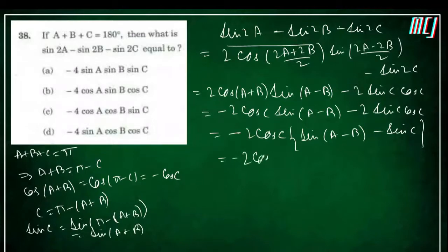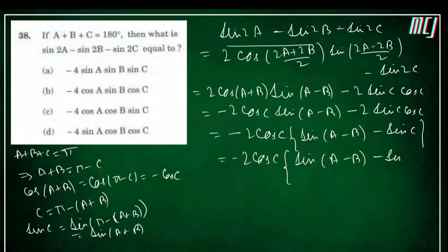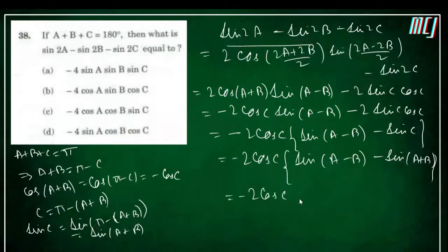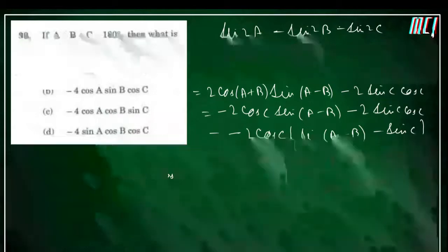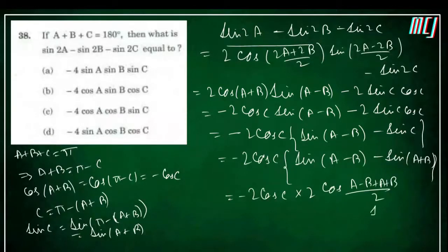Applying the formula again on sin(A−B) − sin(A+B): this equals −2cosC · [2cos(A+B/2+A−B/2)·sin(−B)] wait — applying sum-to-product: sin(A−B) − sin(A+B) = −2cosA·sinB.